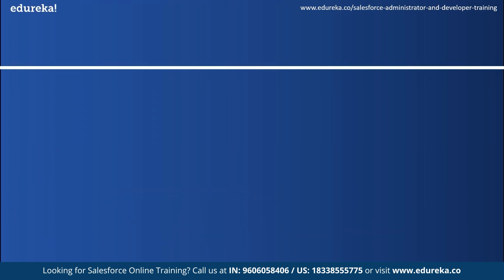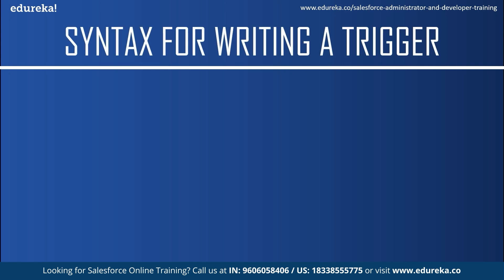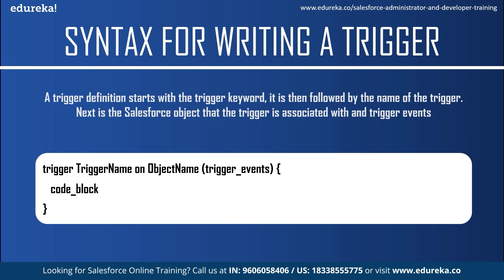Now let me explain the syntax for a Salesforce trigger. The syntax of a trigger definition is quite different from a class definition syntax. A trigger definition starts with the trigger keyword, followed by the name of the trigger — you can name it anything you want. Next is the Salesforce object the trigger is associated with, such as leads, contacts, accounts, or any custom objects — known as an S-object. Next is the trigger event, and you can fire a trigger on one or more comma-separated events. Finally, the body of the code contains the condition under which it fires.